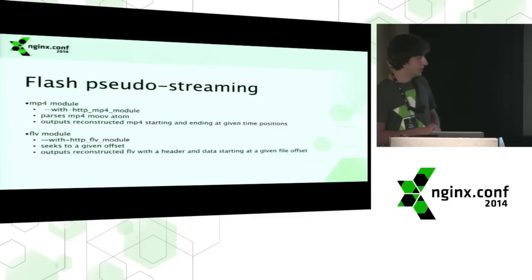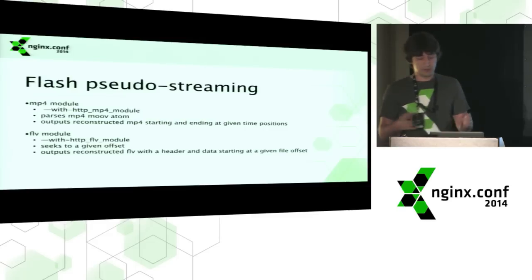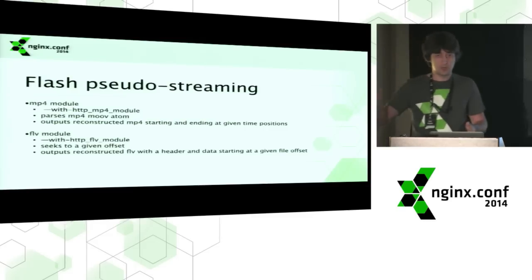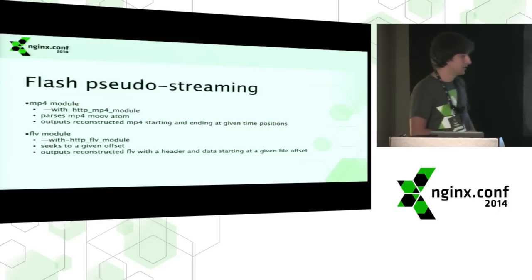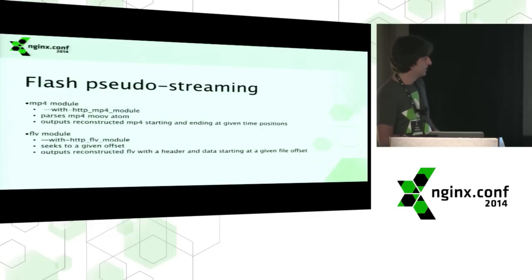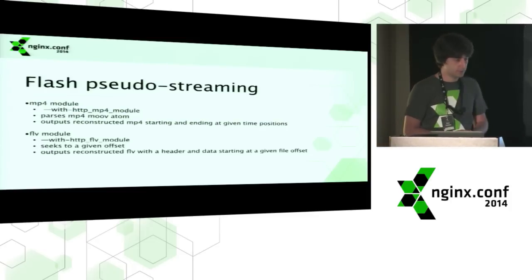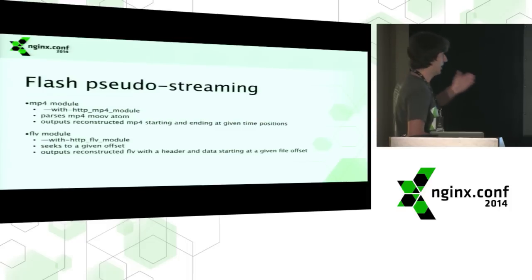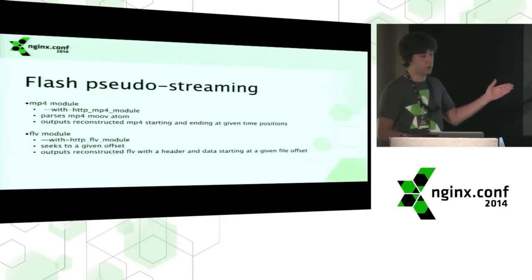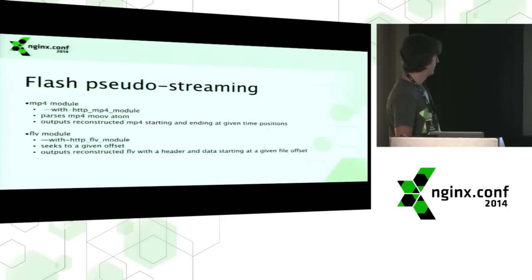Progressive download has one downside: you cannot seek to a random position within a file. To solve this problem, a pseudo streaming technology was created. It differs from progressive download with the ability to seek to a random position. Nginx has two modules for this: the MP4 module and the FLV module. These modules were developed for pseudo streaming with Adobe Flash.